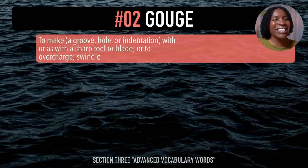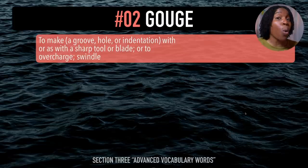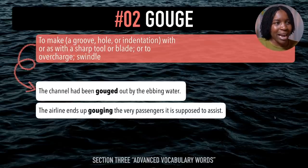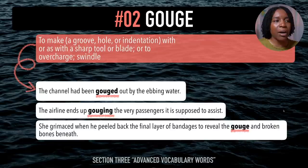The next advanced vocabulary word is 'gouge'. Watch my mouth — gouge. The word gouge means to make a groove, hole, or indentation with or as with a sharp tool or blade, or to overcharge or swindle. Example sentences: The channel had been gouged out by the ebbing water. The airline ends up gouging the very passengers it is supposed to assist. She grimaced when he peeled back the bandages to reveal the gouge and broken bones beneath. Last time — gouge.